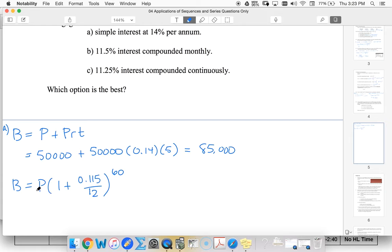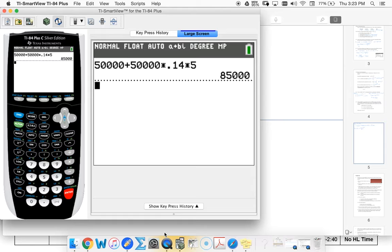Our principal should be $50,000. That's $50,000 times (1 plus 11.5 percent divided by 12) raised to the 60th power.